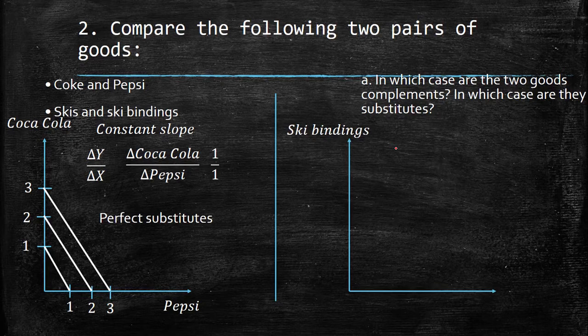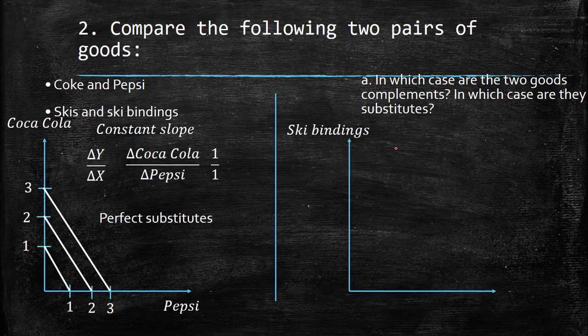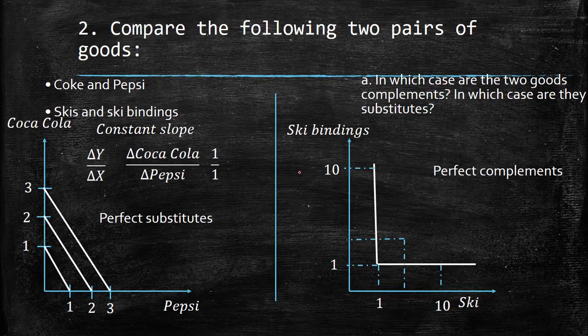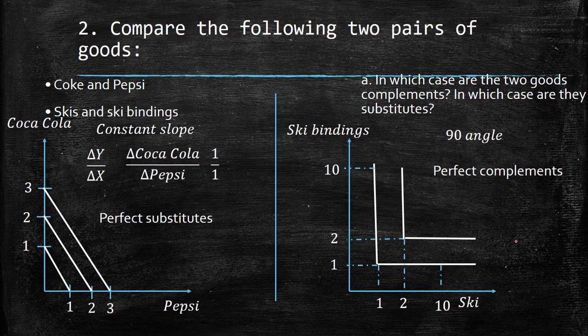Ski bindings are supports you need mandatory when using skis — you cannot use one without the other. So skis and ski bindings are perfect complements, because you need the consumption of one alongside the other to get any satisfaction. You can have many skis, but if you don't have bindings they won't work. For this reason the indifference curve has a 90-degree angle shape.